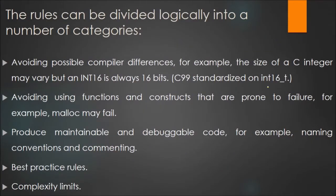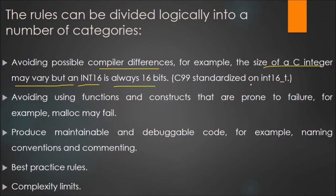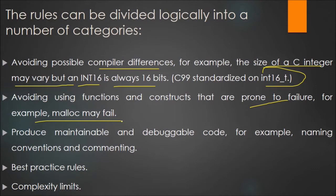The rules can be divided logically into several categories. These include: avoiding possible compiler differences — for example, the size of a C integer may vary, but an INT16 should always be 16, standardized in C99 as int16_t; avoiding functions and constructs prone to failure — for example, malloc may fail; producing maintainable and debuggable code, such as naming conventions and commenting; and best practice use and complexity limitations.